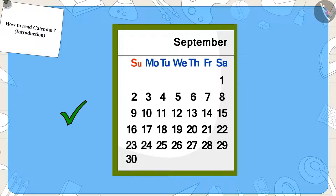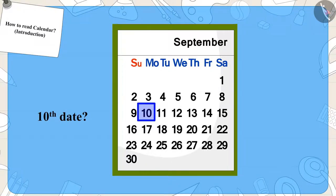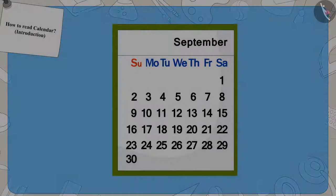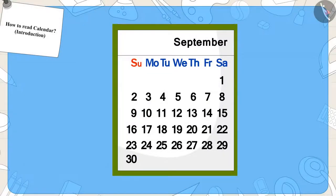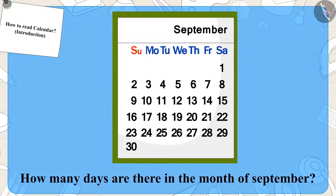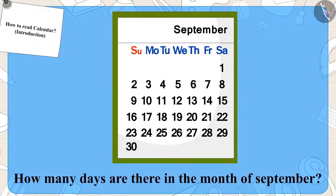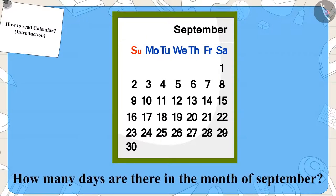Now, can you find the date 10 in here? That's great! You got the date right! Children, can you tell how many days are there in the month of September? That's right — 30 days!